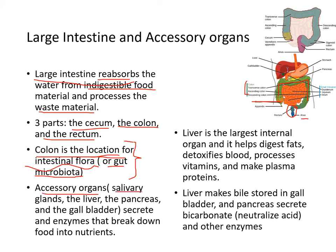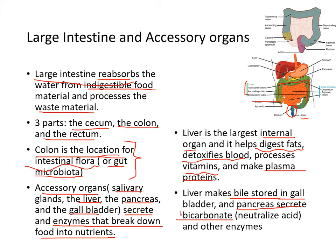Accessory organs — salivary glands, the liver, the pancreas, and the gallbladder — all secrete enzymes that break down food into nutrients. The liver is the largest internal organ; it helps digest fats, detoxifies blood, processes vitamins, and makes plasma proteins. It makes the bile stored in the gallbladder. The pancreas secretes bicarbonate, which neutralizes the chyme because bicarbonate is basic, and also secretes other enzymes.